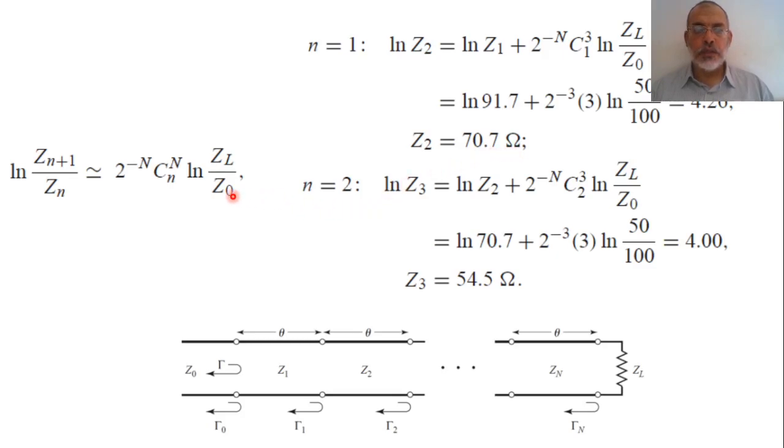The last section, ln Z3 over Z2 could be 2 to the power minus N times C2 times ln ZL over Z0. ln Z3 would equal ln Z2, and Z2 we already calculated, plus 2 to the power minus N times C2 times ln ZL over Z0. Z2 is 70.7, 2 to the power minus 3, C2 is 3, ln 50 over 100 would be 4. Z3 would be e to the power 4 which is 54.5 ohms. By taking Z1, Z2 and Z3 we already calculated the characteristic impedance of the different sections of the proposed binomial multi-section transformer.